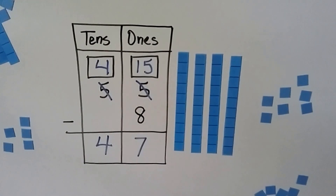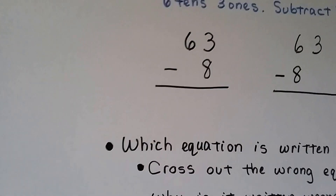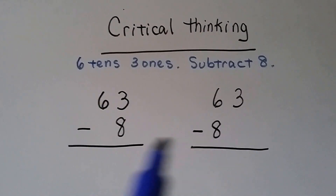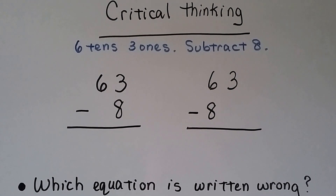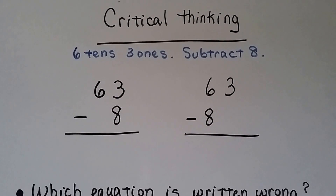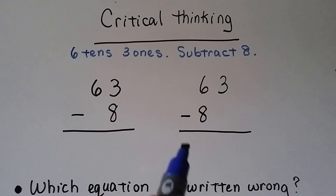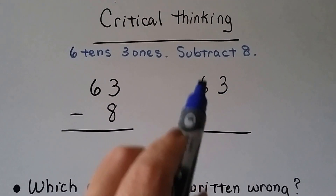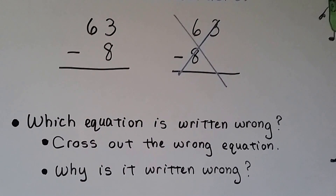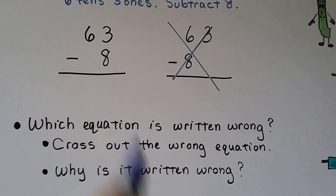We regrouped, and we're going to keep practicing this in future videos — and you should practice too. Here's some critical thinking: if we had 6 tens and 3 ones and we need to subtract 8, which equation is written wrong? The 8 is 8 ones, and if it's placed in the 10's place, that's the wrong one. We cross out the equation that is wrong. We were supposed to subtract an 8 in the 1's place, not the 10's place.